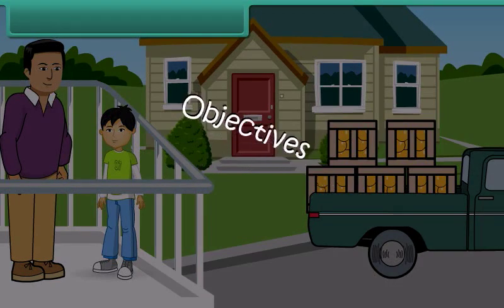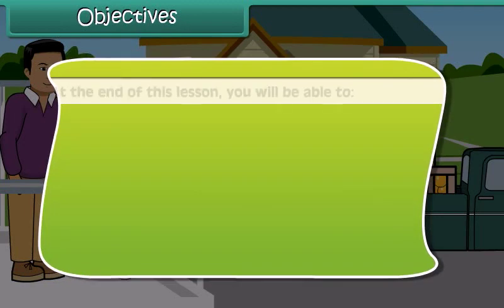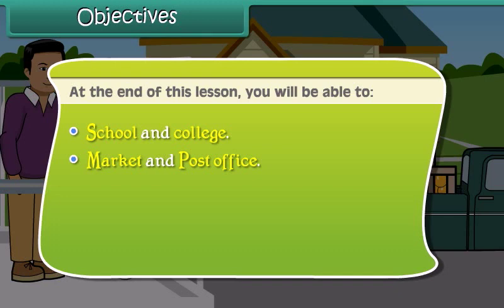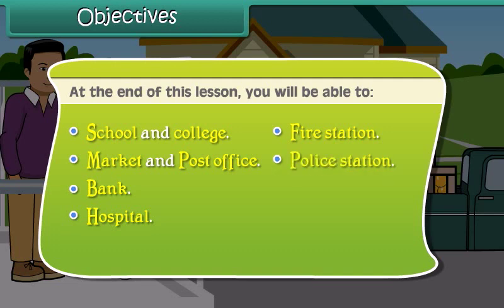Objectives. At the end of this lesson, you will be able to know about neighborhood places such as school and college, market and post office, bank, hospital, fire station, police station, railway station and bus stand.